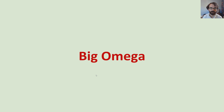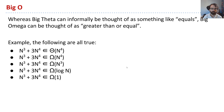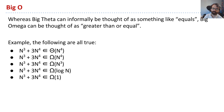Let's add one last item to our asymptotics toolbox, which we'll call big omega. Just as you can think of big theta as roughly like equals and big O as less than or equal to, big omega is basically just greater than or equal.